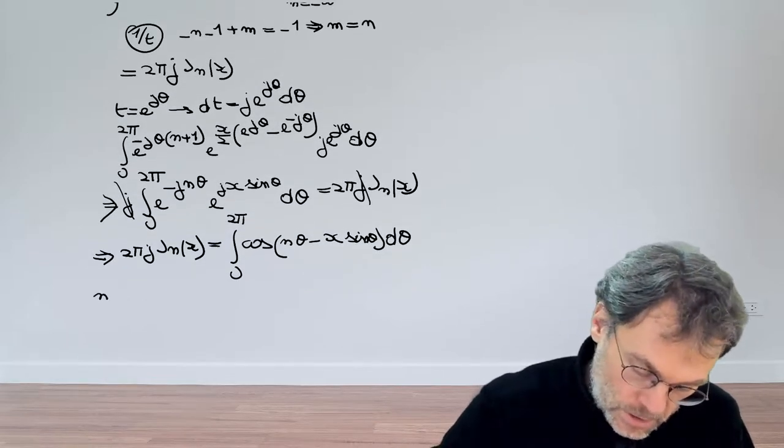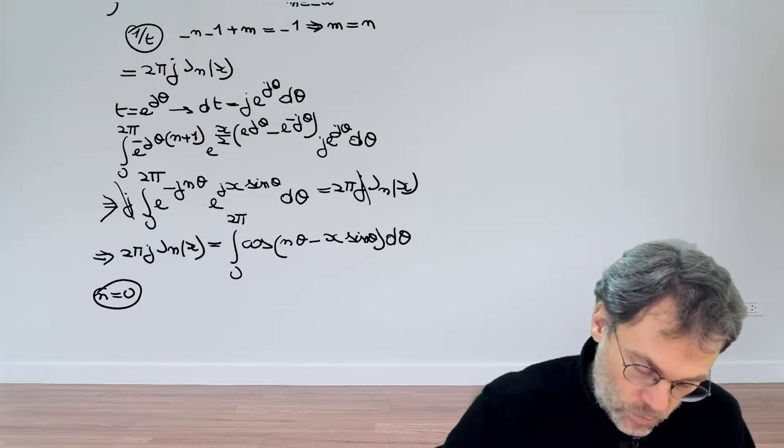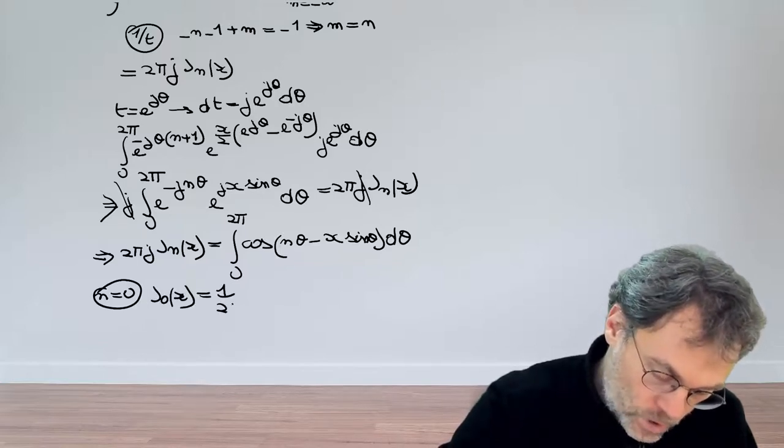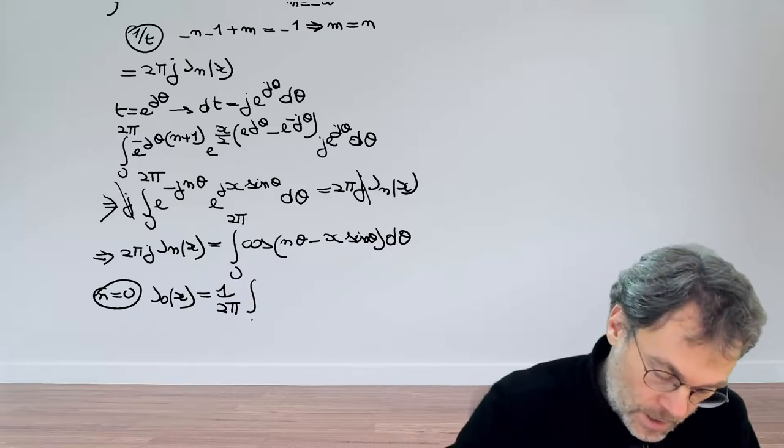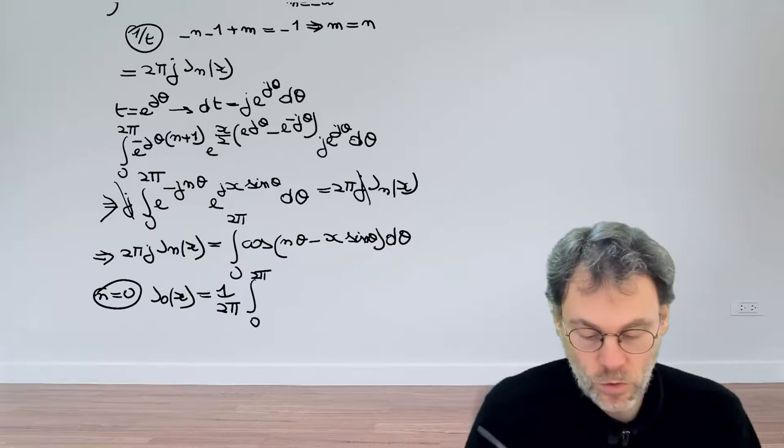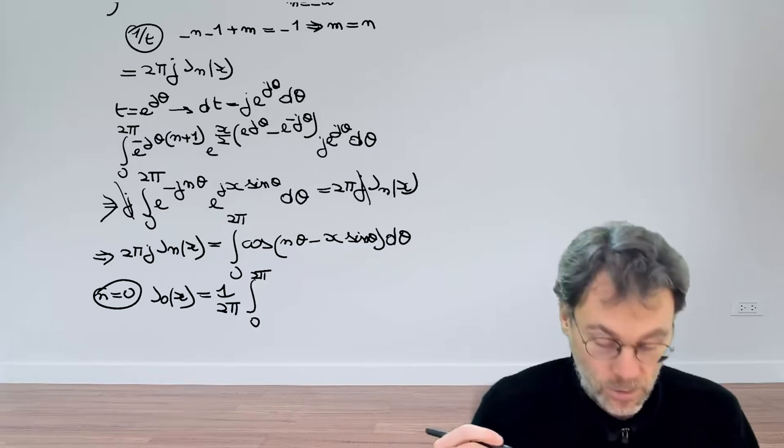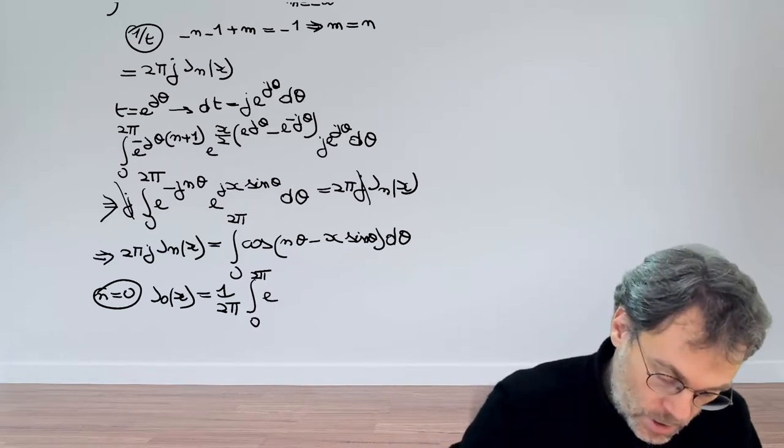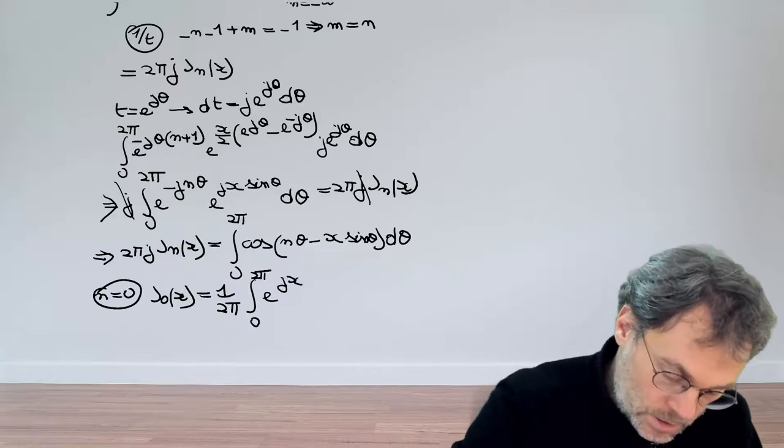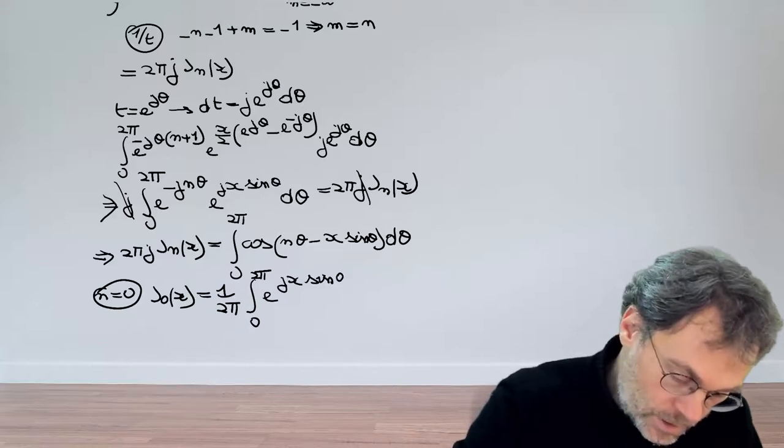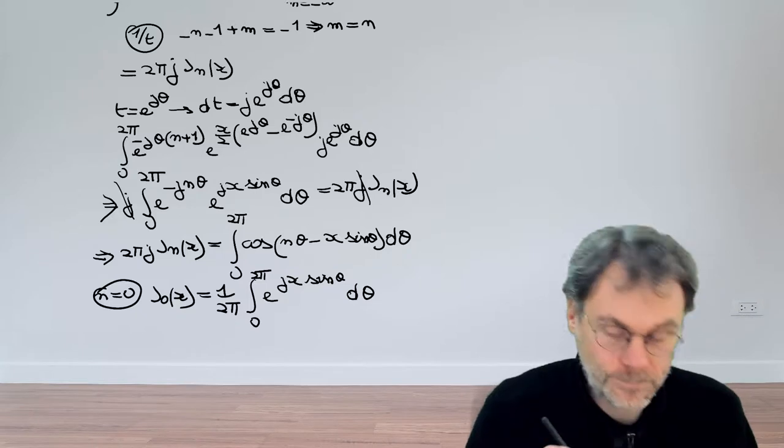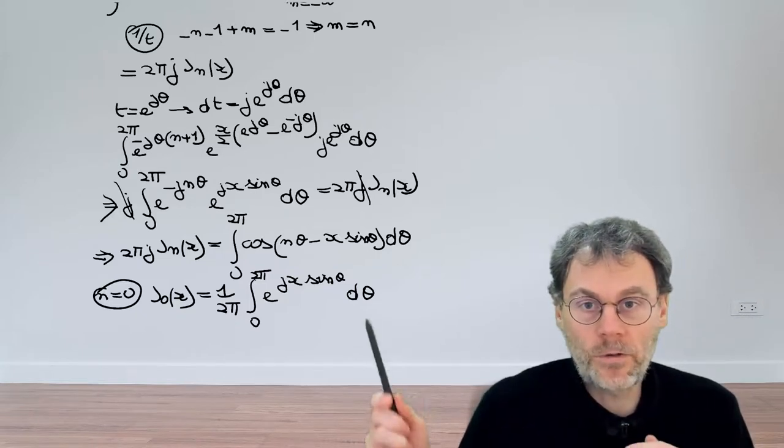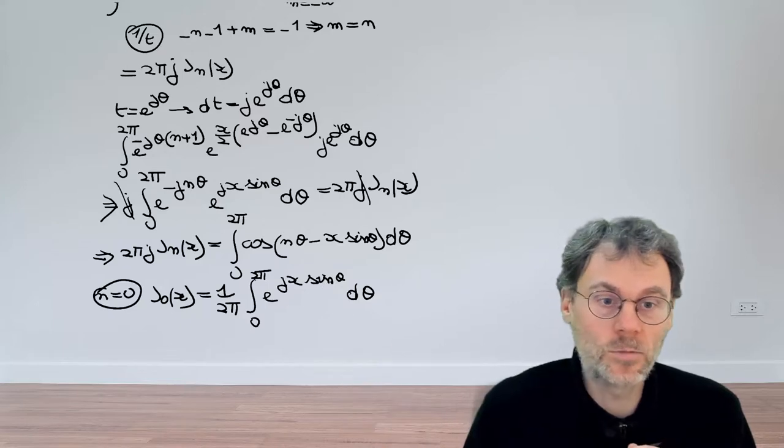So for the case where n is equal to 0, we can write that j_0 of x is 1 over 2π and then we have the integral from 0 to 2π. The first factor just reduces to unity and then for the second factor we have exponential jx sine of θ dθ. Which is almost what we need to prove. The only difference is that we have a sine here and it should be a cosine.